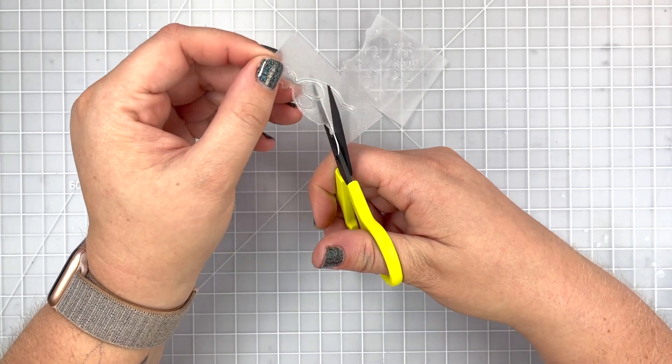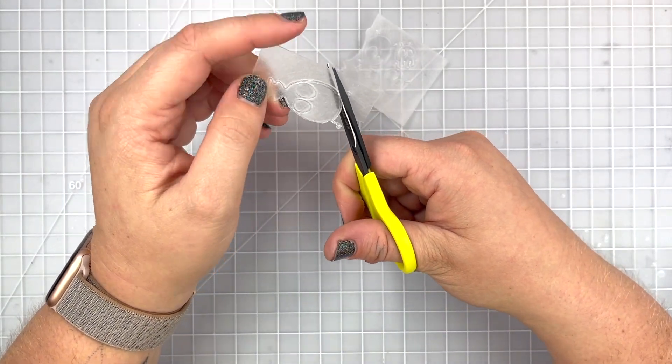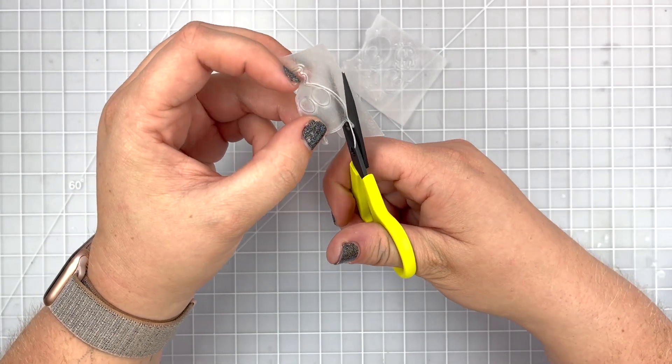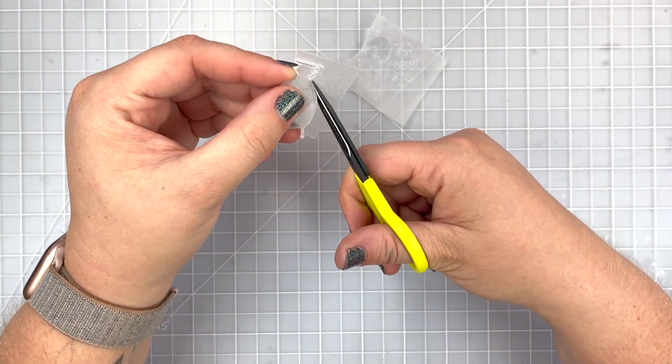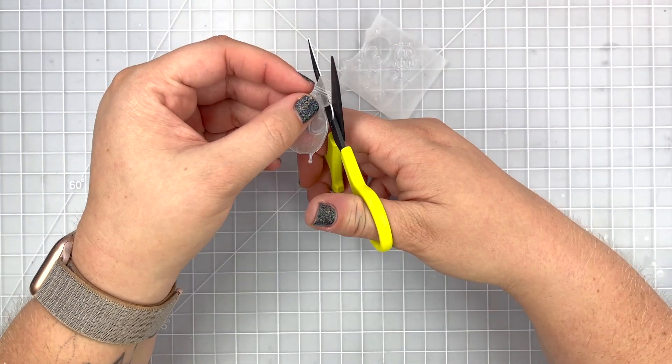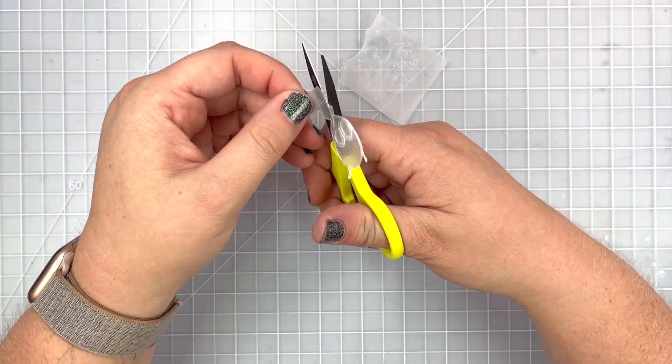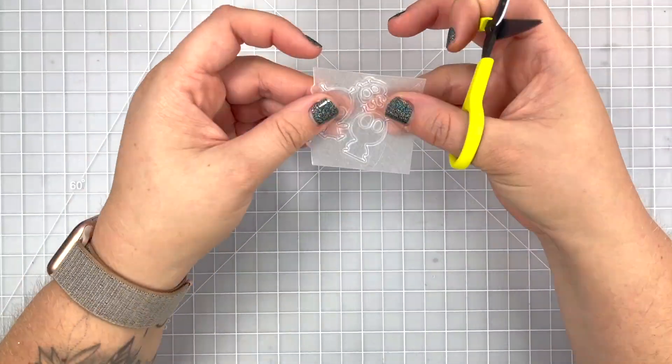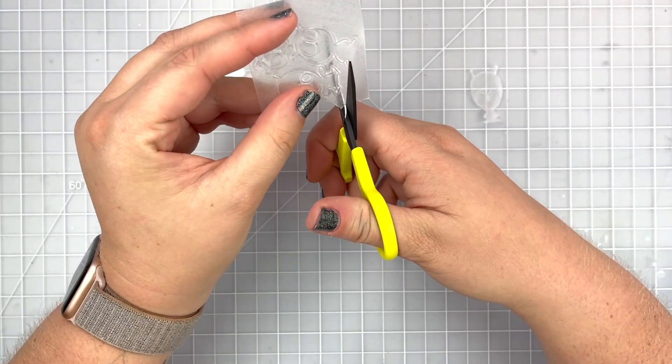I'm going to trace the outline of the die and make sure I'm being very careful around my little alien antenna here because they were a little weaker. I'm going to leave the eyes inside because I'm just going to be coloring it instead of die cutting and paper piecing.